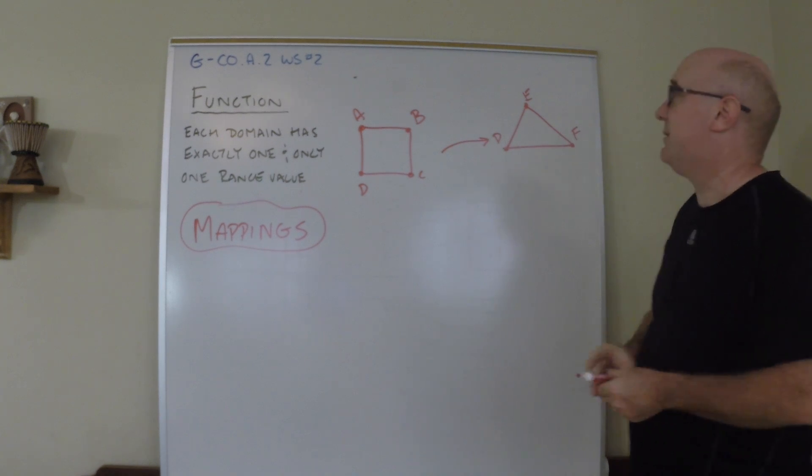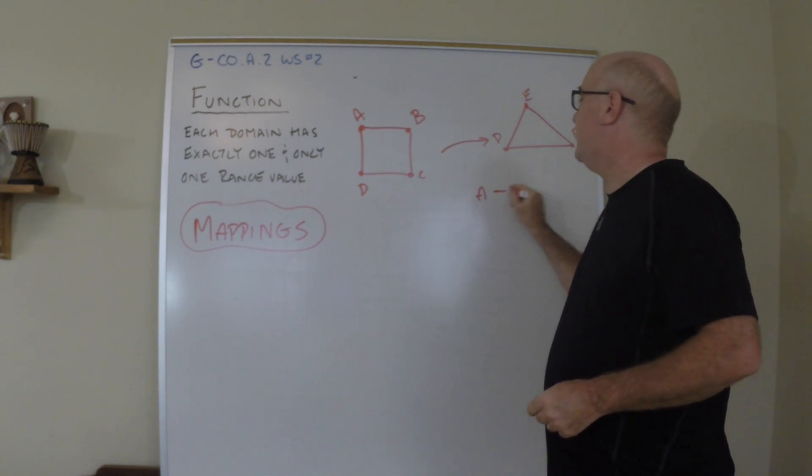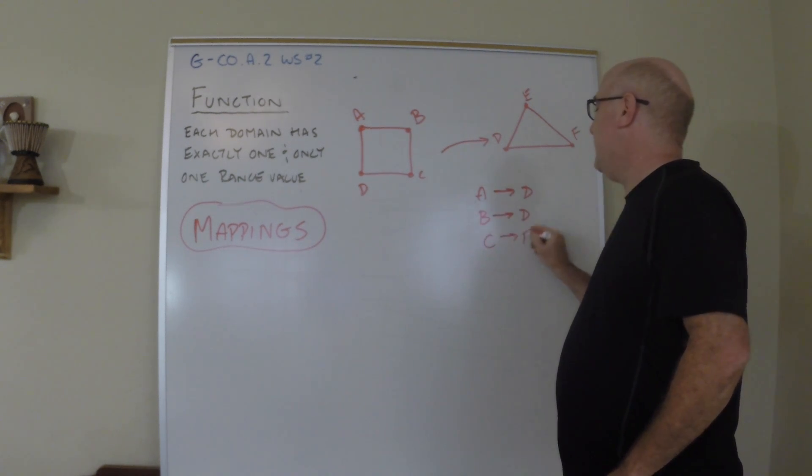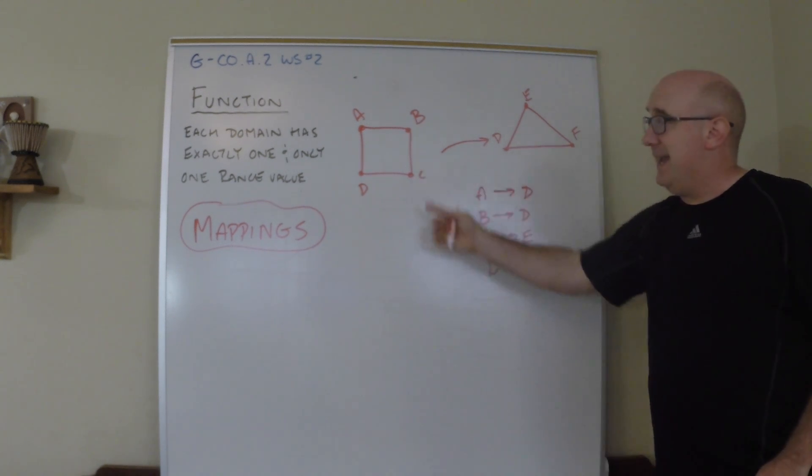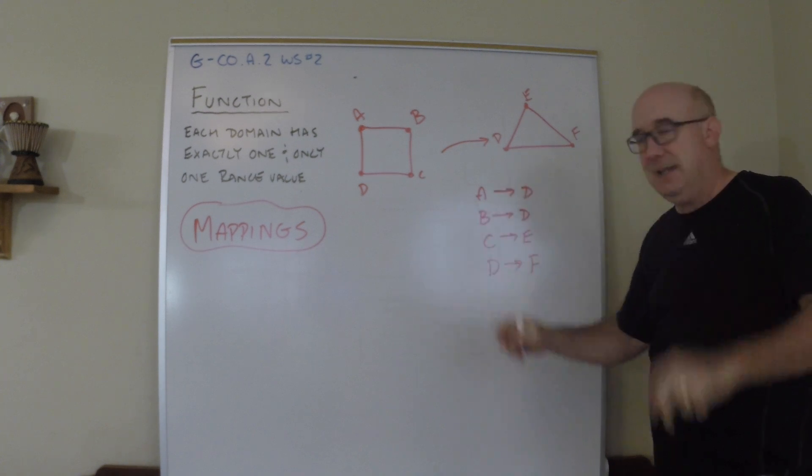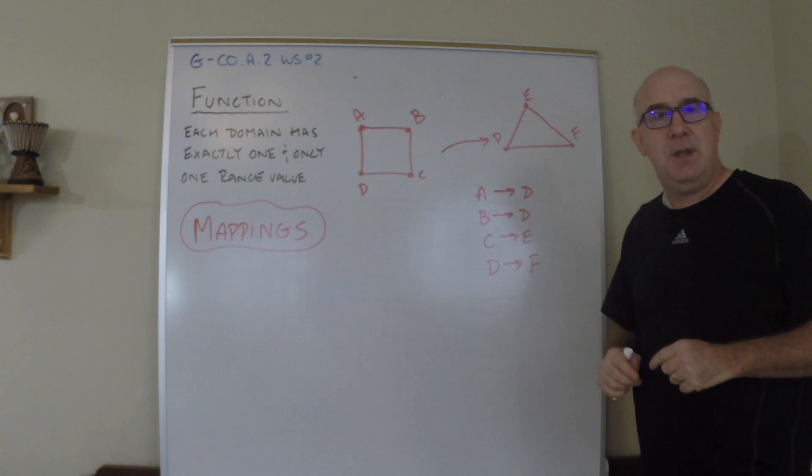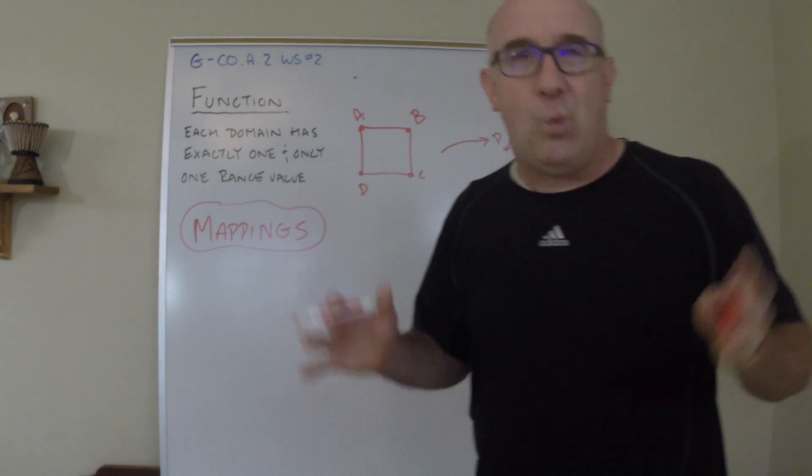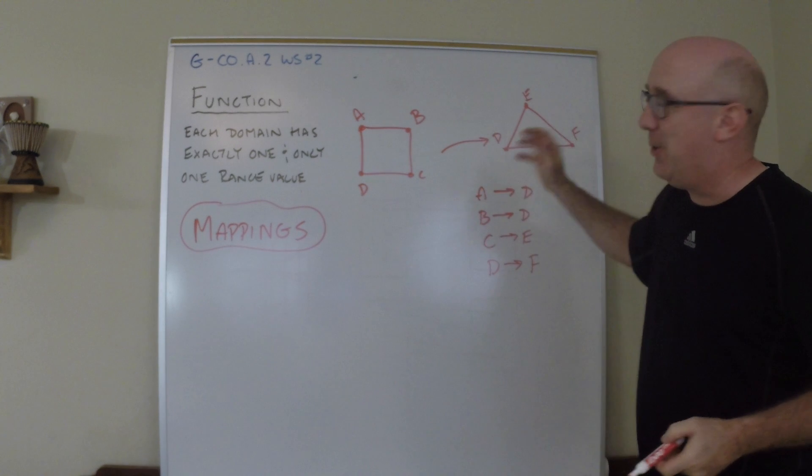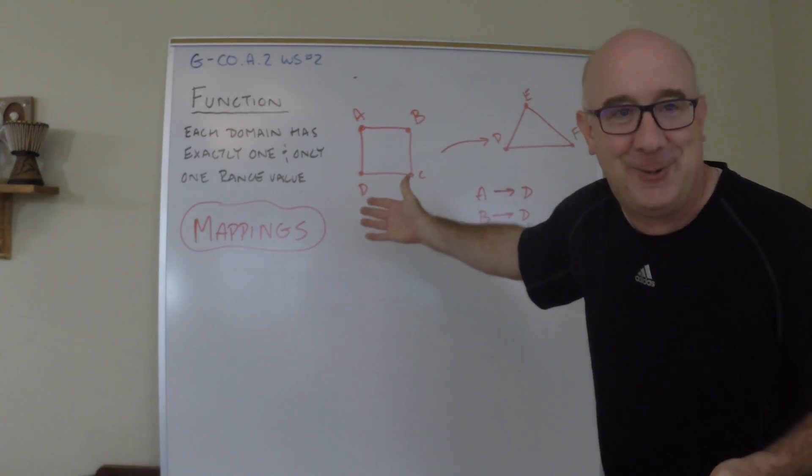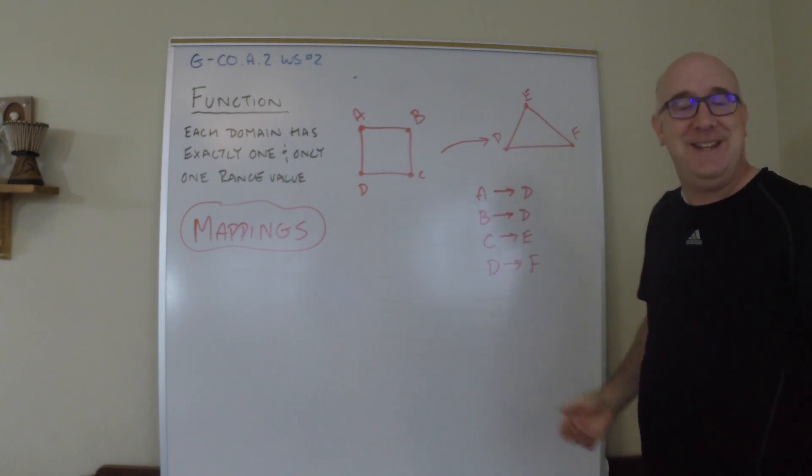Does this make sense? Well, A could go to D, B could go to D, C could go to E, and D could go to F. Everybody in the domain found a place in the range. Now I know you're crossing your eyes and you're saying to yourself, what is he talking about? We actually don't like these kinds of mappings. We don't want quadrilaterals when we're done with them turning into triangles. We don't want that.